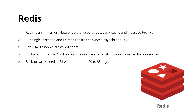In cluster mode, 1 to 15 shards can be used. When cluster mode is disabled, you can have only one shard. So when creating a Redis cluster, you can operate in two different modes: cluster mode enabled, where you can go up to 15 shards, or cluster mode disabled, where you can have only one shard. Backups are stored in S3 with a retention period of 0 to 35 days.